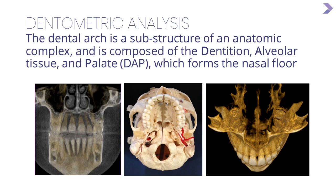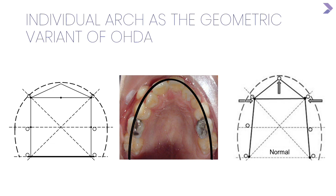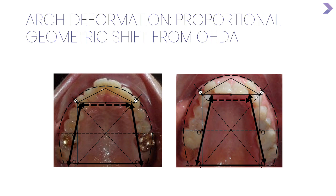When you see deformity on the palate, it's going to affect the airway — simple as that. I call the optimal human arch form OHDA. The thick line is the baseline — just as Angle used the profile as a baseline, we're now using the actual scale of that point as a baseline, which is more stable, more predictable, and more measurable. Instead of looking at what's there as normal, we now look at it as a shift from this optimal arch form, which exists at a purely anatomic stage with no functional forces applied.